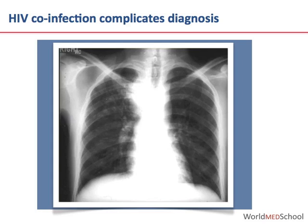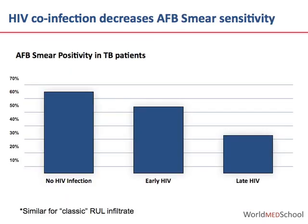The concurrence of HIV infection in TB further complicates diagnosis because the chest x-ray may be atypical with hilar or mediastinal lymph nodes or pleural effusions, not shown here. And particularly in late HIV, the proportion of patients with positive AFB smears is much decreased, so smear becomes less sensitive.